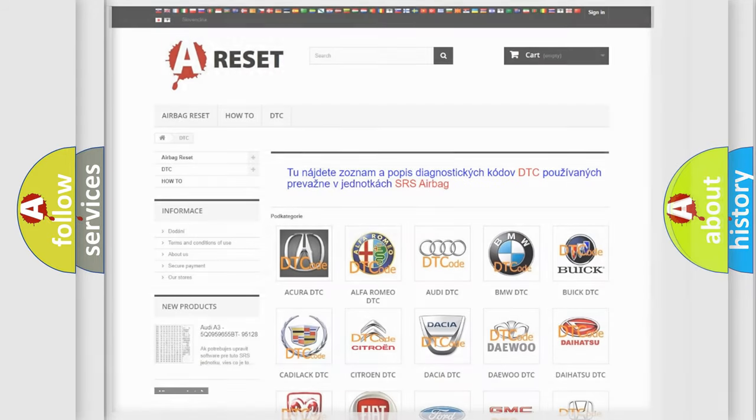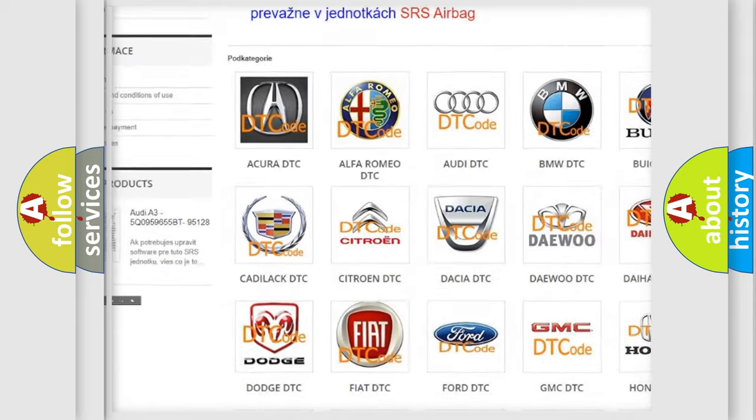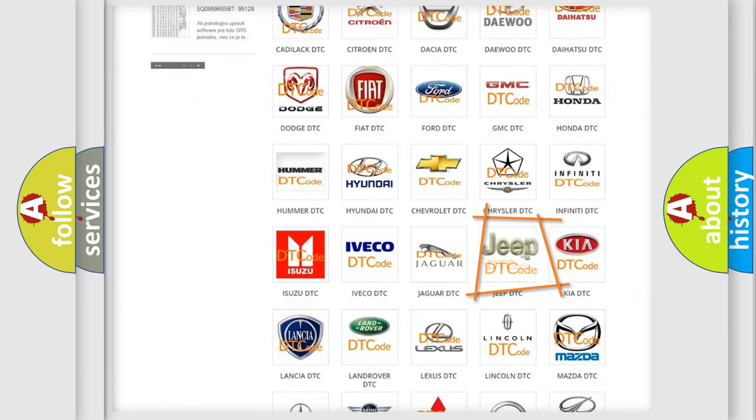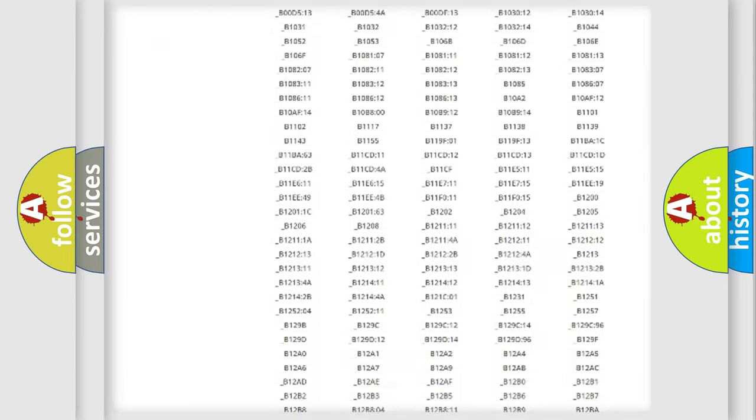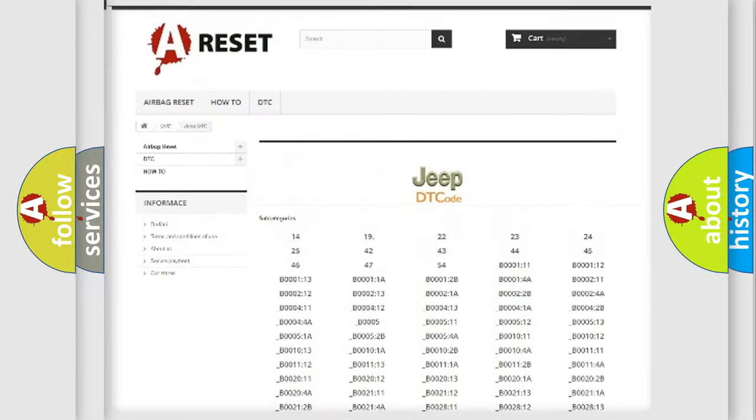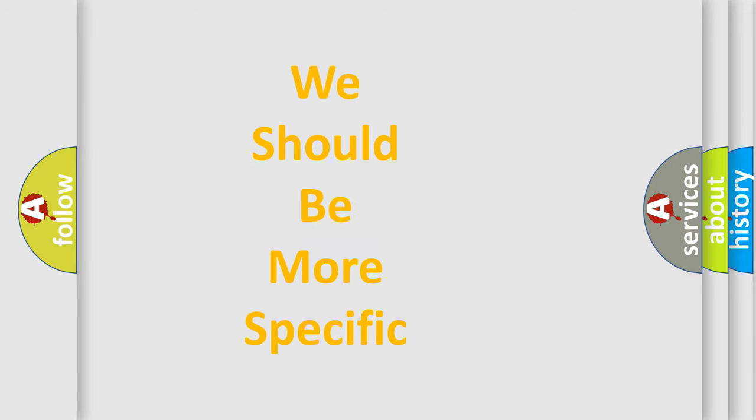Our website airbagreset.sk produces useful videos for you. You do not have to go through the OBD2 protocol anymore to know how to troubleshoot any car breakdown. You will find all the diagnostic codes that can be diagnosed in a car or vehicle, and many other useful things. The following demonstration will help you look into the world of software for car control units.